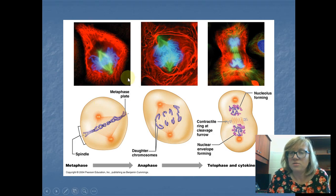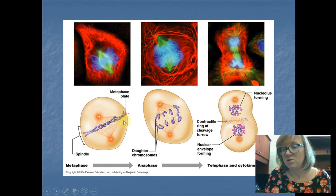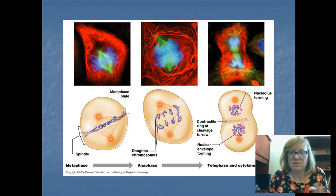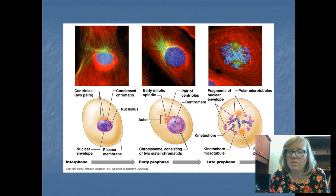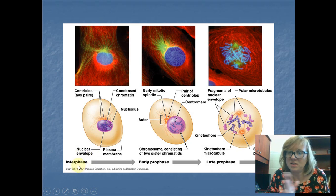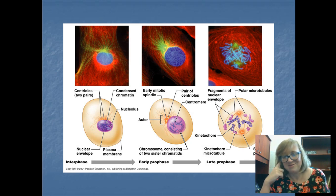Next phase is called metaphase, where the chromosomes line up at the middle. Let's go back really fast. You can think of the phases as interphase, and then the phases of mitosis are PMAT. So you can remember it as IPMAT.